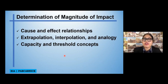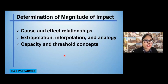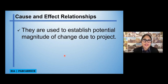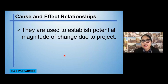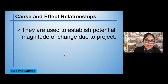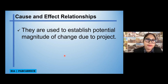When we say determination of magnitude of impact, there are actually two methods to that. We have cause and effect relationships, interpolation or extrapolation and analogy, and capacity and threshold concepts. When we say cause and effect relationships, they are used to establish the potential magnitude of change due to the project. We have to identify the magnitude — whether it is really your project or activity that caused that specific impact.